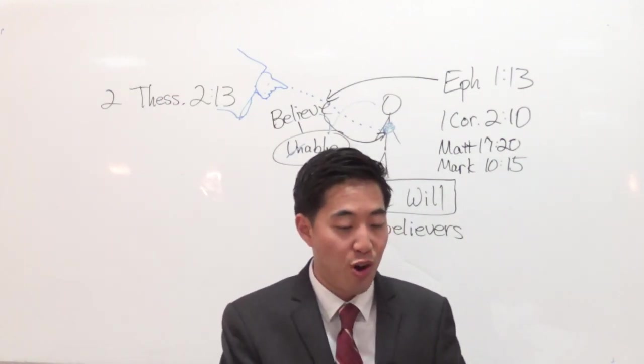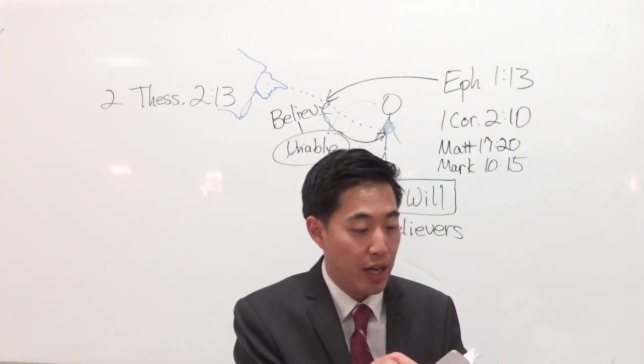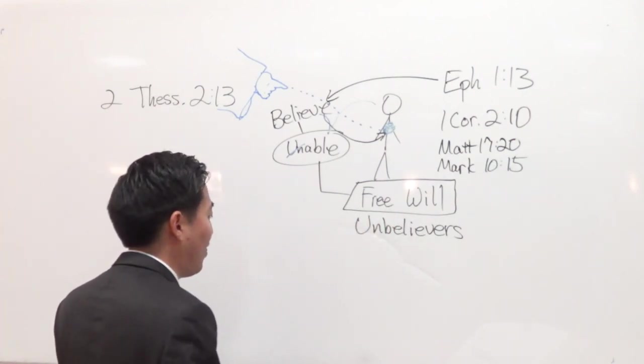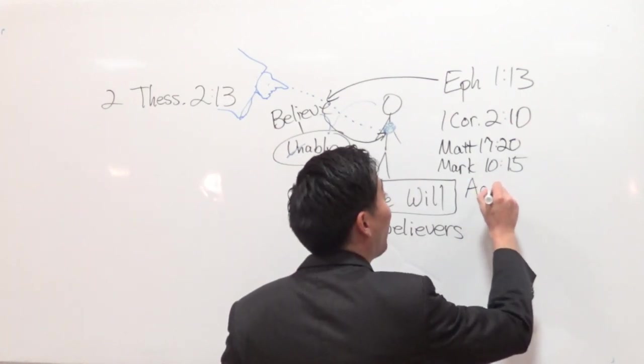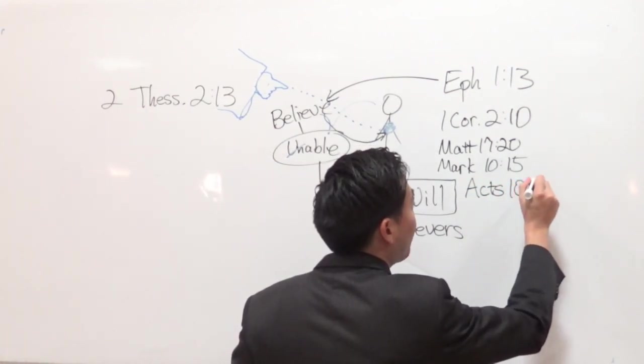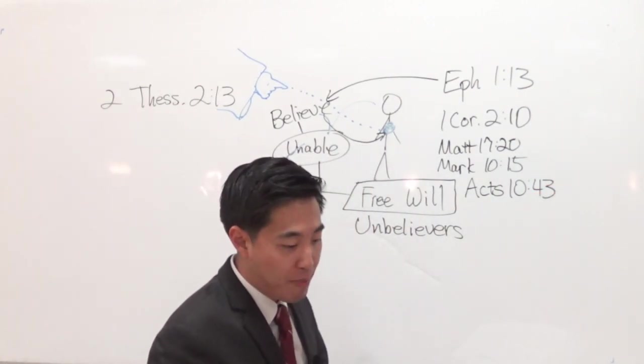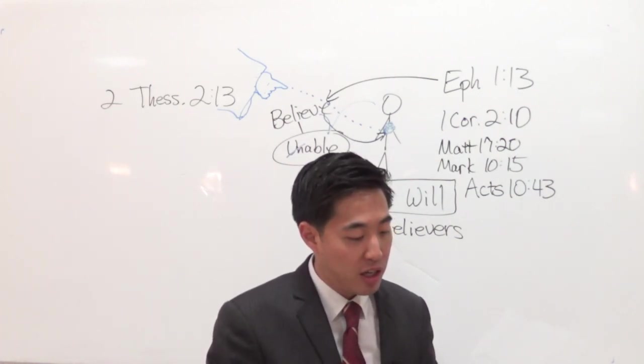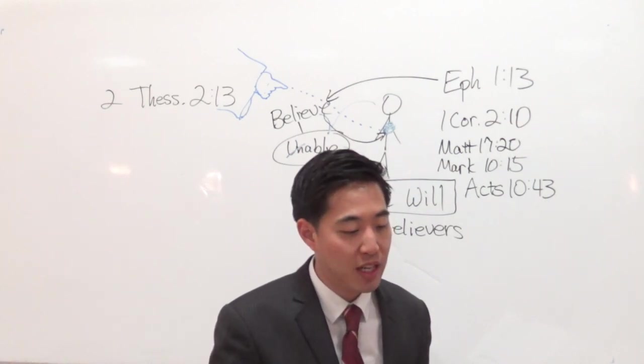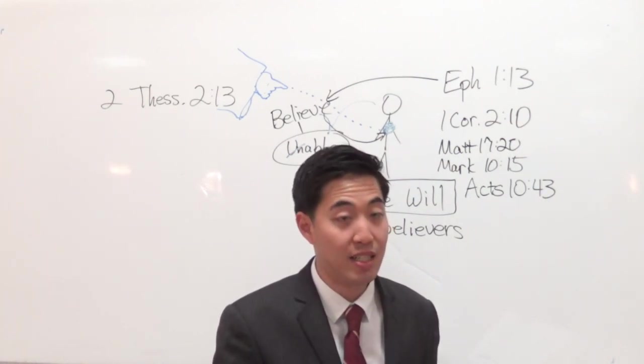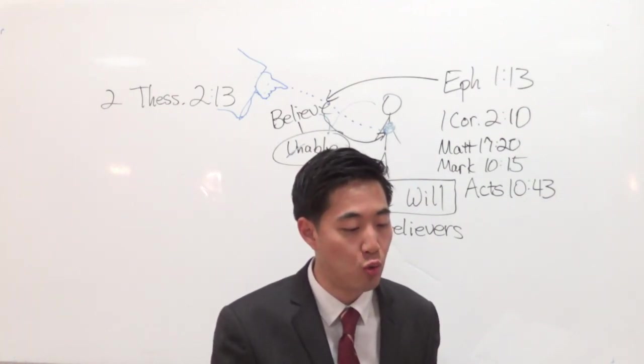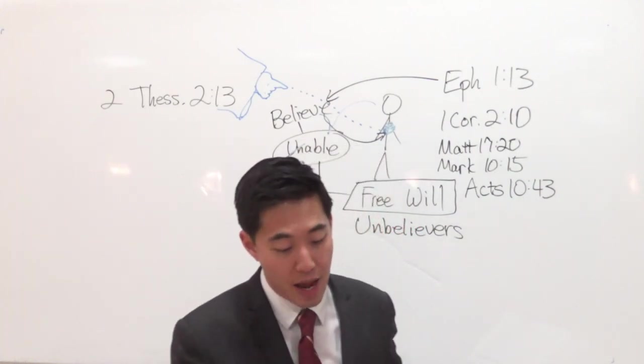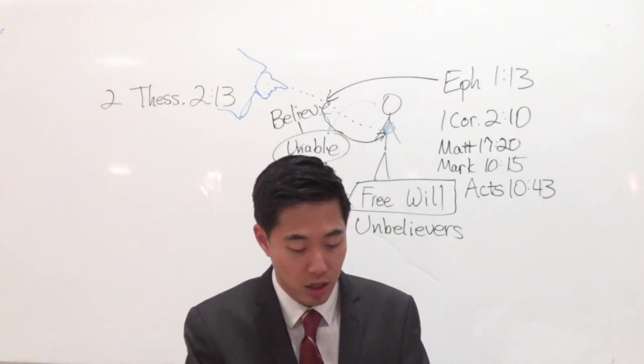Look at Acts chapter 10 verse 43. Now Acts chapter 10 verse 43, that's why it makes sense, if it's going to be as simple as childlike faith, that truly means whosoever, anybody can receive and believe Christ for salvation. That makes so much sense now. Look at Acts chapter 10 and then we'll read verse 43: 'To him give all the prophets witness, that through his name whosoever,' it didn't say the elect, it didn't say the special chosen ones, 'whosoever believeth in him shall receive remission of sins.' See that? So anybody, it's not a special part of the elect.